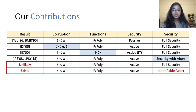Therefore, the main question we consider is whether there exists an elementary reduction that achieves full security against a dishonest majority. We show that while an elementary reduction with full security is unlikely to exist in this setting, it is possible to design a reduction that achieves identifiable abort. Let me now elaborate on these results.